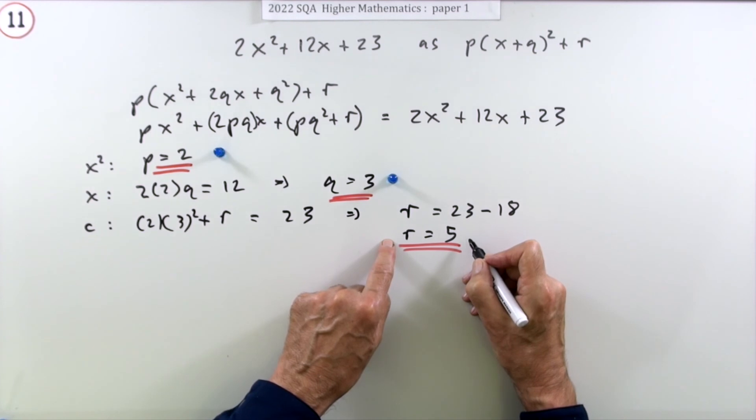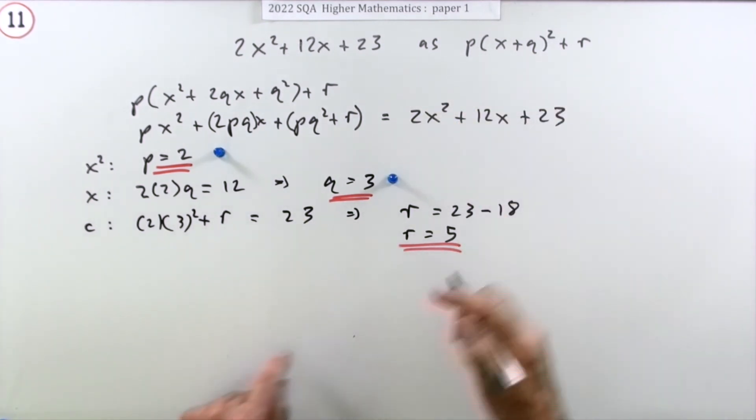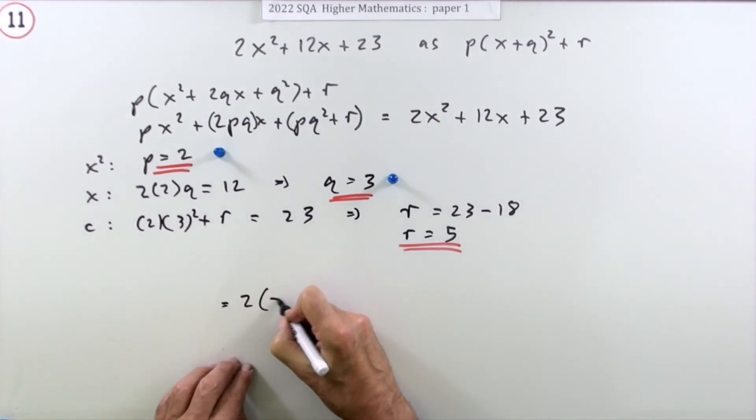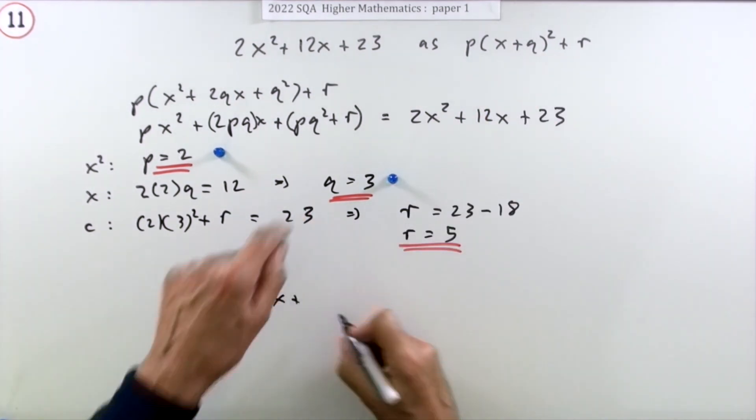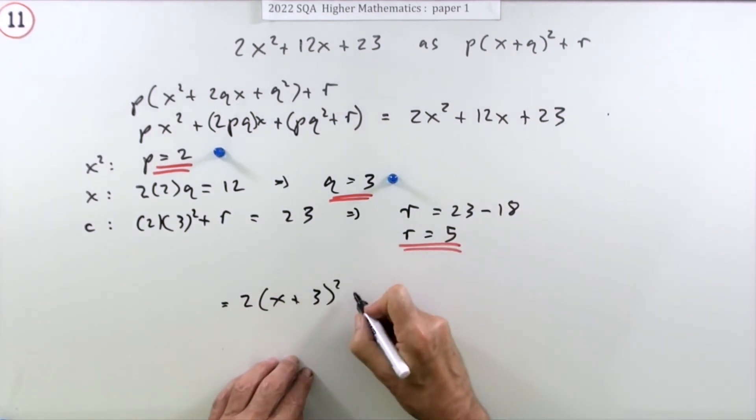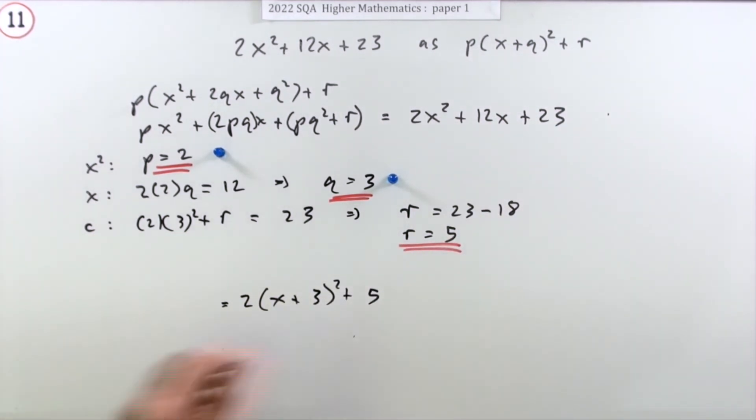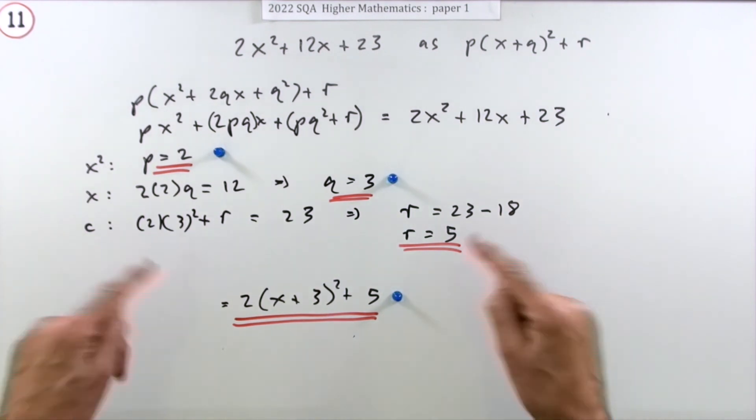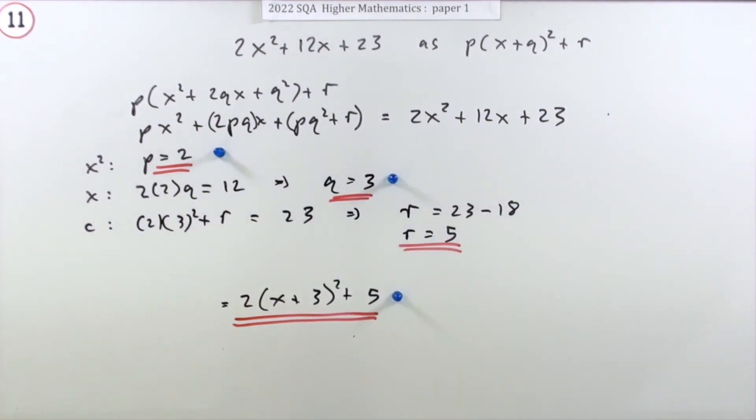But the last mark doesn't come as soon as you get the 5. You have to rewrite it also, which means that the final answer is going to be 2(x+3)² + 5. Now you get the mark. Now that's the algebraically rigorous method, but it's much longer than doing it the arithmetical way.